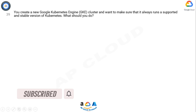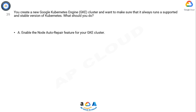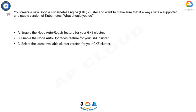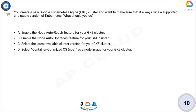You create a new Google Kubernetes Engine (GKE) cluster and want to make sure that it always runs a supported and stable version of Kubernetes. What should you do? Option A: Enable the node auto repair feature for your GKE cluster. Option B: Enable the node auto upgrades feature for your GKE cluster. Option C: Select the latest available cluster version for your GKE cluster. Option D: Select Container-Optimized OS (COS) as a node image for your GKE cluster. Think for 10 seconds for the answer.